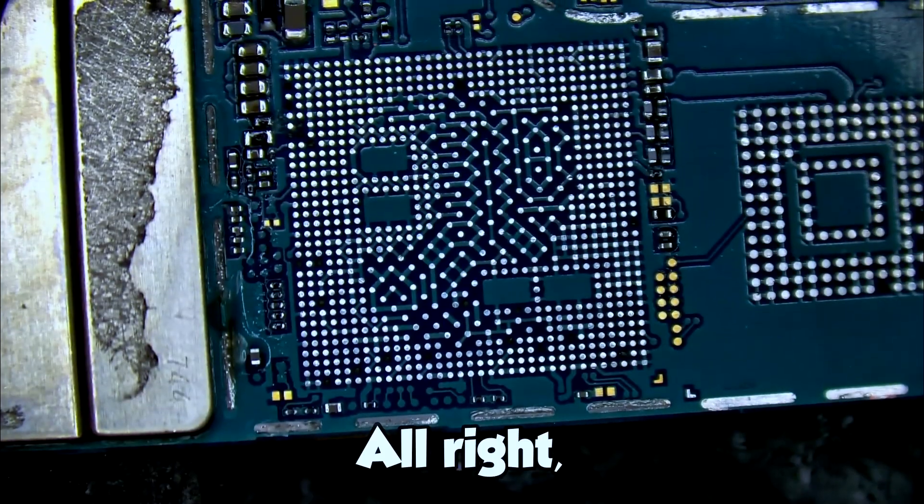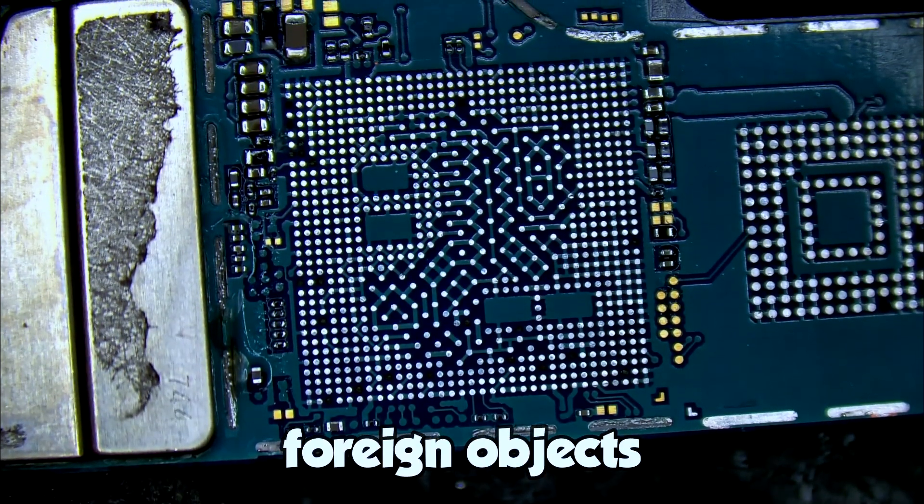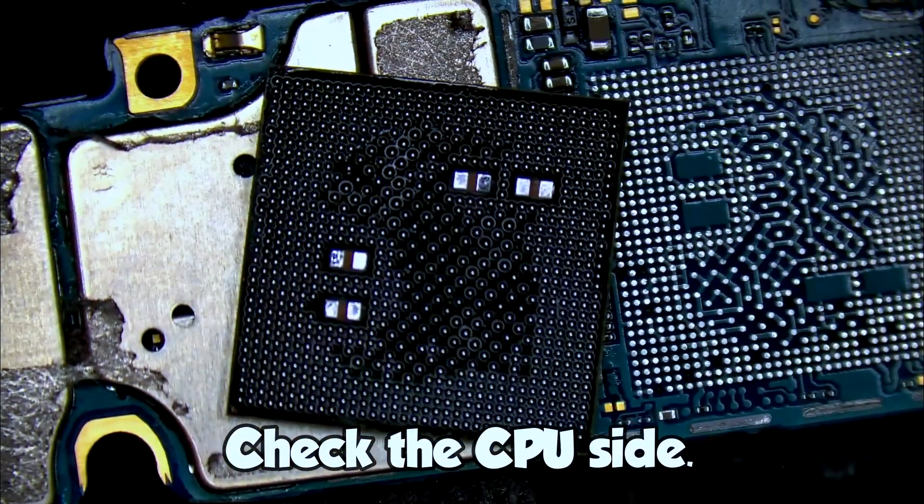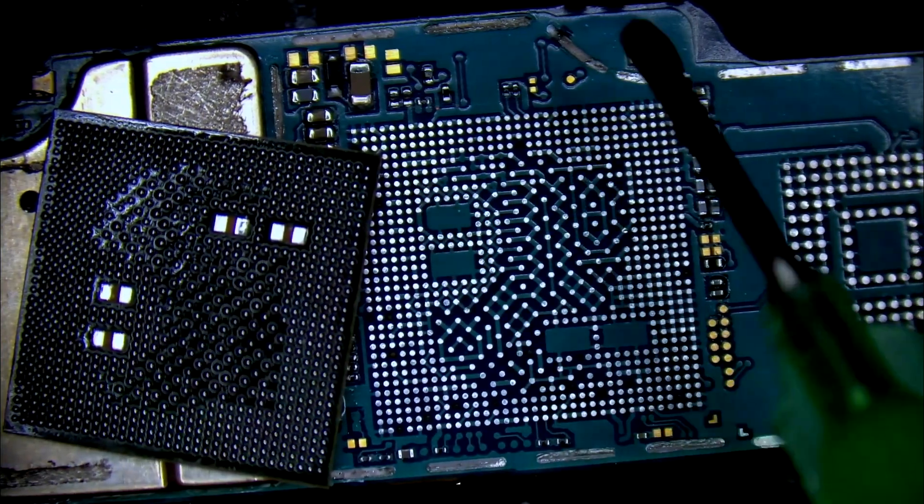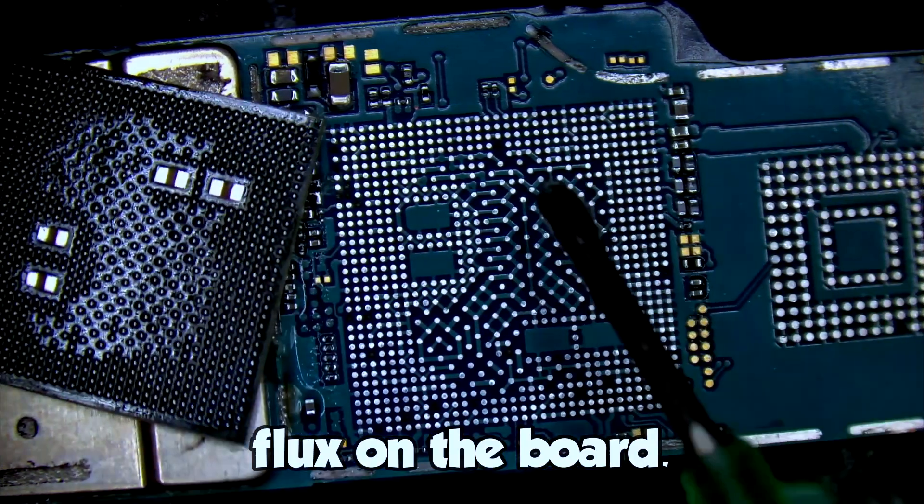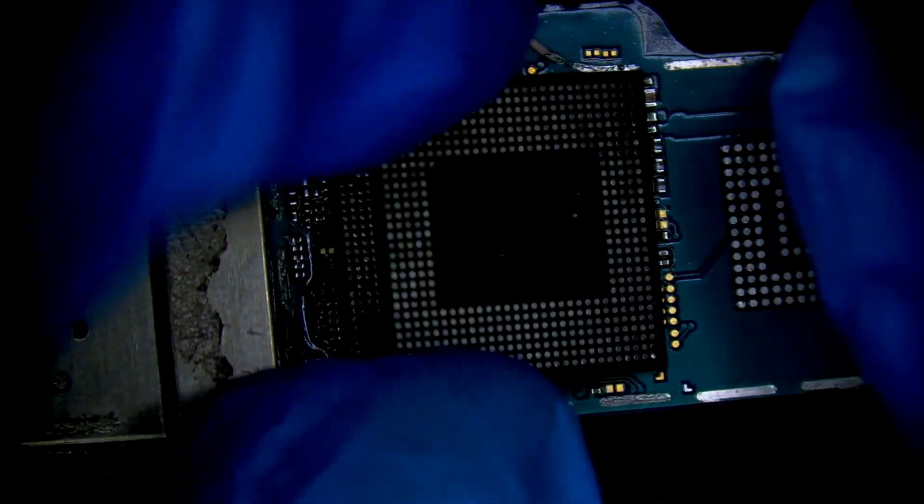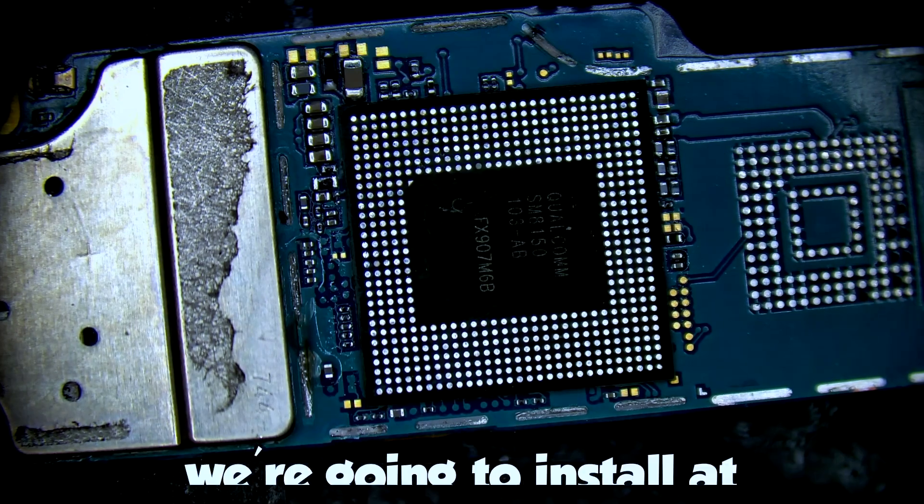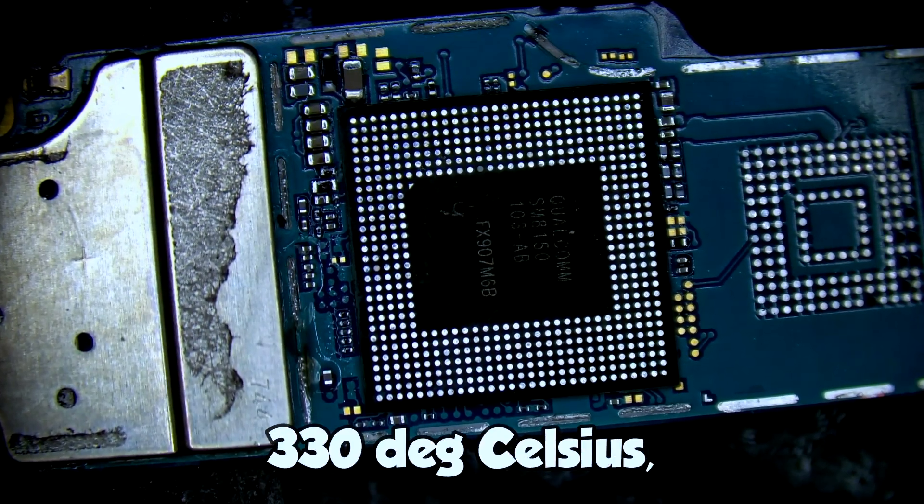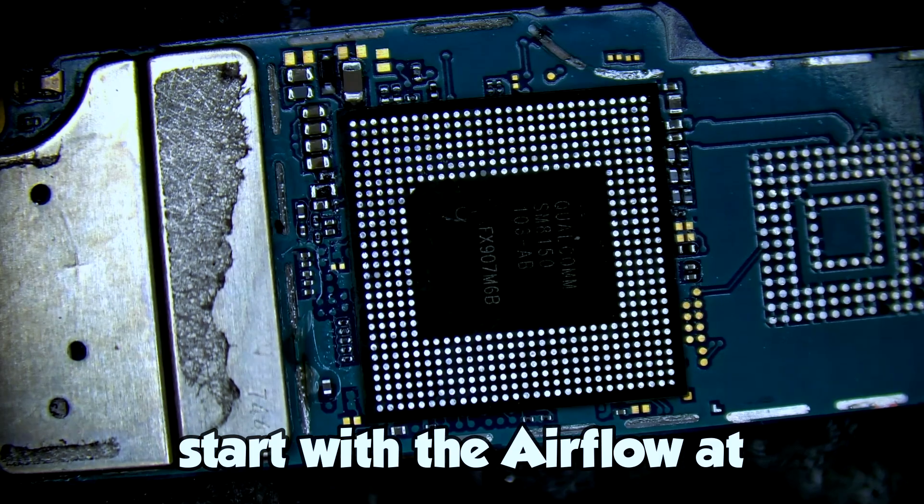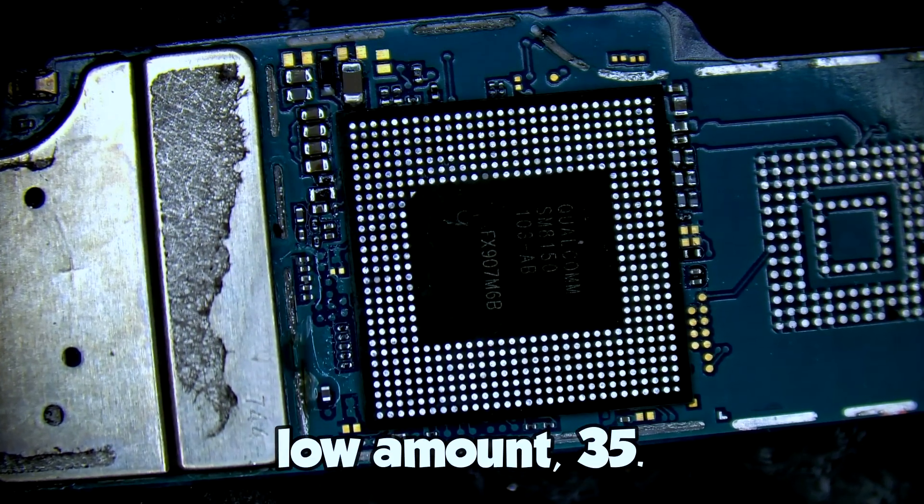Alright, make sure there's no foreign objects and everything's clean. Check the CPU side. Alright, so we'll put some flux on the board. Alright, we're going to install at 330 degrees Celsius, and we're going to start with the airflow at a low amount, 35.